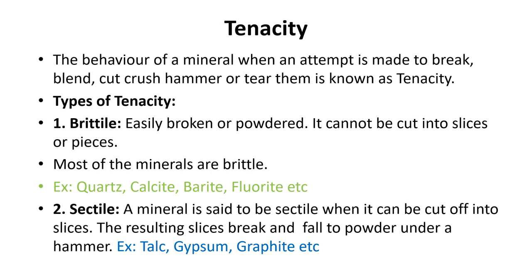Coming to another property — tenacity. Tenacity refers to how a mineral behaves when an attempt is made to break, bend, cut, crush, hammer, or tear it. There are five to six types of tenacity. Brittle means the mineral can be easily broken or powdered and cannot be cut into slices — most minerals are brittle; examples include quartz, calcite, barite, and fluorite. Sectile means a mineral can be cut into small slices or pieces, but the resulting slices break and fall to powder under a hammer — examples are talc, gypsum, and graphite.